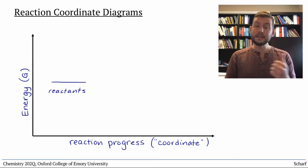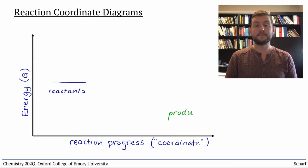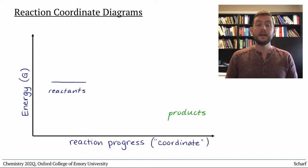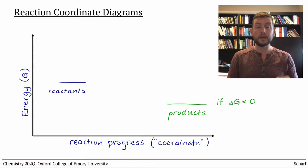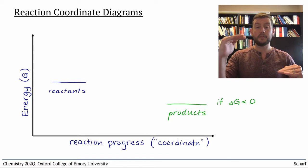And on the right side are the products, which have a different combined total energy. If the reaction is spontaneous, and delta G is negative, then the products are lower in energy or more stable than the reactants.